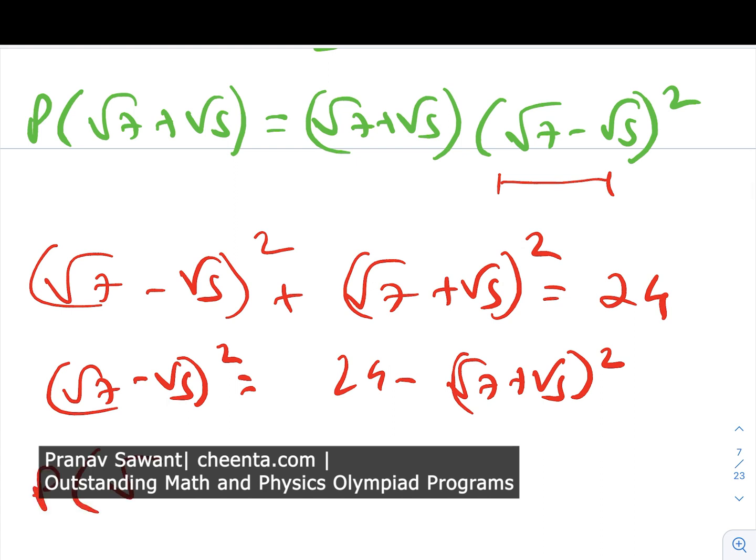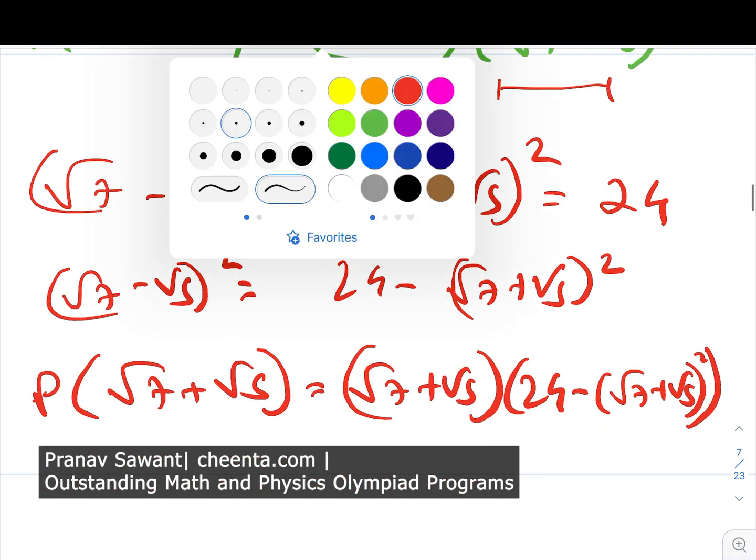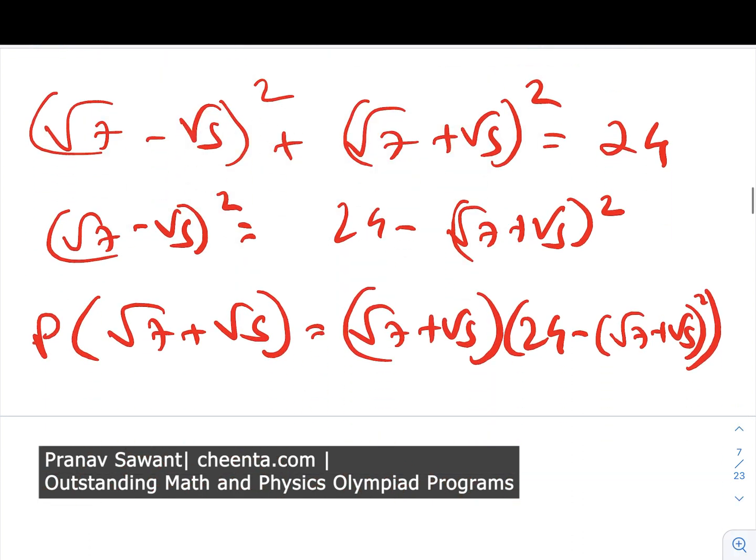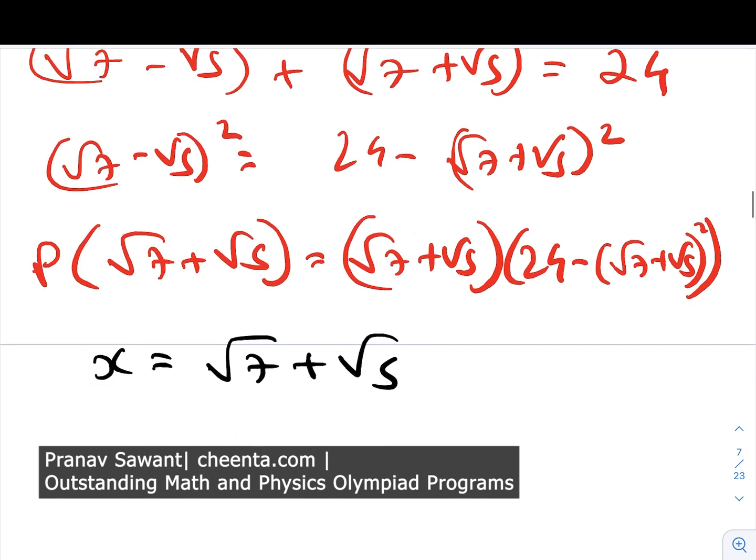We can simply see that (√7 - √5)² is nothing but 24 - (√7 + √5)². If I substitute this back into our equation, I get (√7 + √5) times [24 - (√7 + √5)²]. After this, we can form a polynomial in p by assuming x to be √7 + √5. Once we do that, we get p(x) = x(24 - x²).